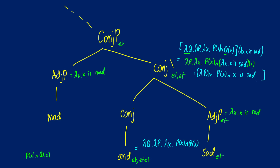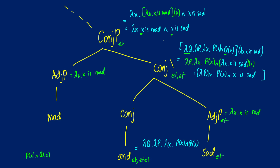Continuing up the tree, we're now applying to lambda P. The lambda P goes away, and lambda X dot X is mad replaces P. Applying X to it gives X is mad, leaving lambda X dot X is mad and X is sad. After the applications, we get lambda X dot X is mad and X is sad.